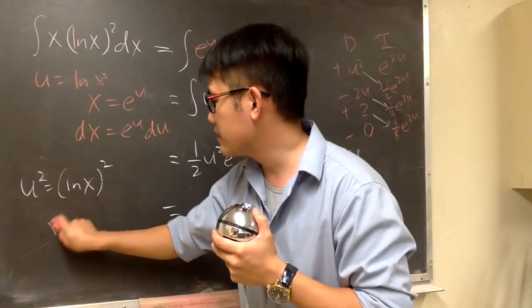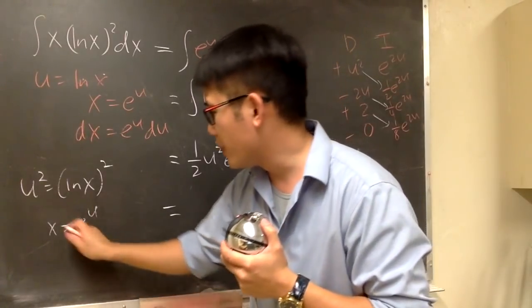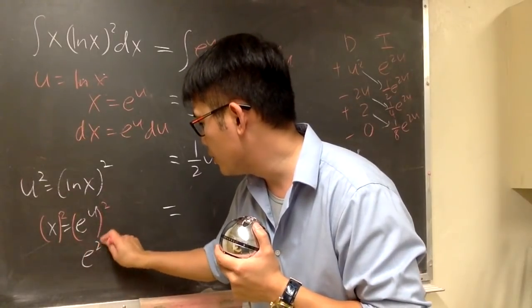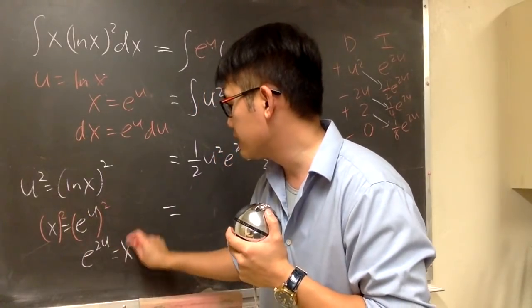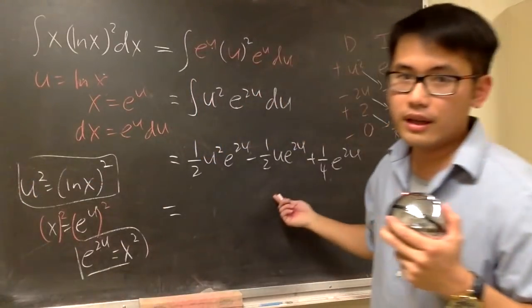Because right here we know x is equal to e to the u. And we can just look at this equation and then square both sides. So that you see this is e to the 2u. And this is just x squared. So I need to use this. And I also need to use that. That's all, right?